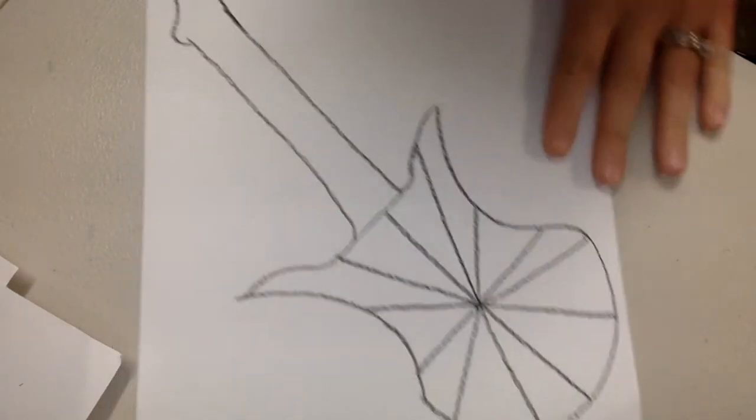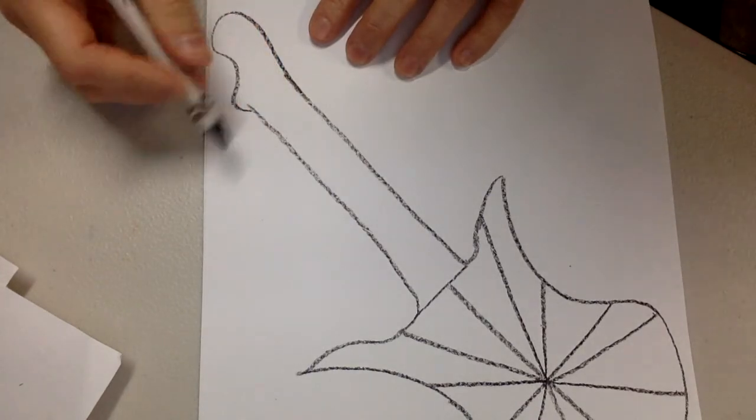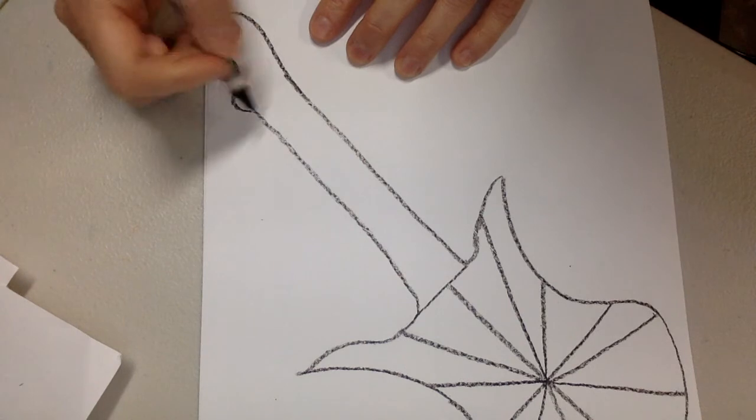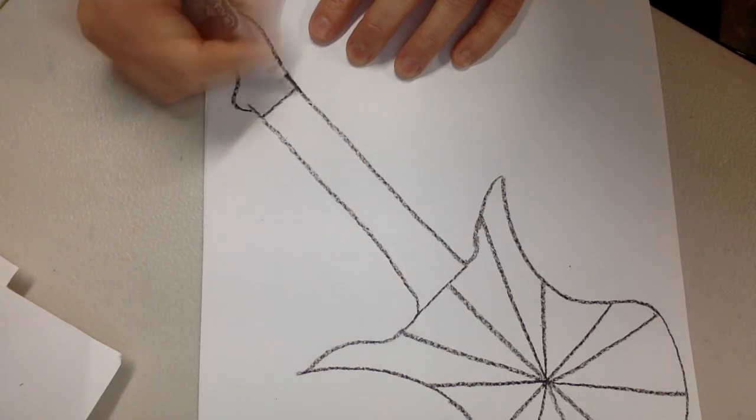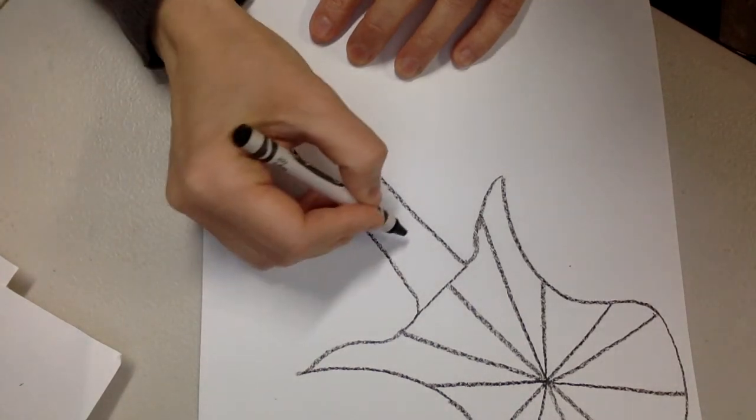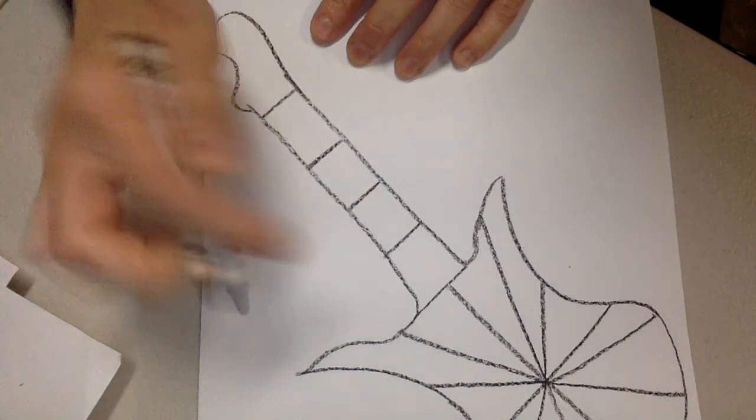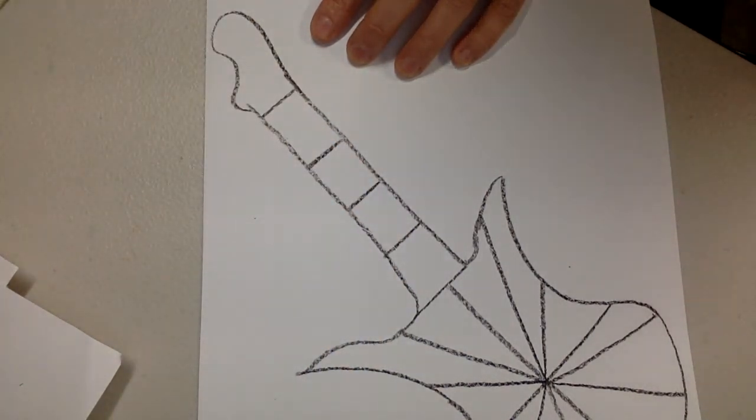Alright, later on we're gonna color that in for a color wheel. Let's work on the handle while we're at it. Up here by the area that you would adjust your guitar to tune it, we're gonna draw a straight line across. And this is what we're gonna do. One, two, three lines. One, two, three, four spaces.